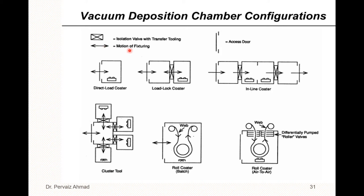The double-headed arrow symbol basically indicates motions of fixturing. The next symbol stands for an access door — whenever you see this symbol it stands for the access door. The following symbol stands for a direct load coater — you can see the load has been placed here, so this symbol stands for direct load coater.